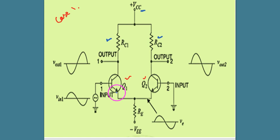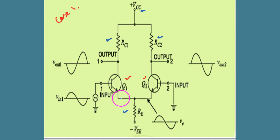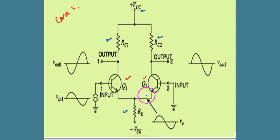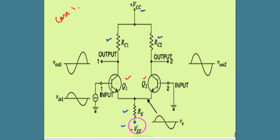The emitter of Q1 is connected with the emitter of Q2, and RE is the common emitter resistor for both Q1 and Q2. A negative VEE supply is given at this end and is attached to both Q1 and Q2.